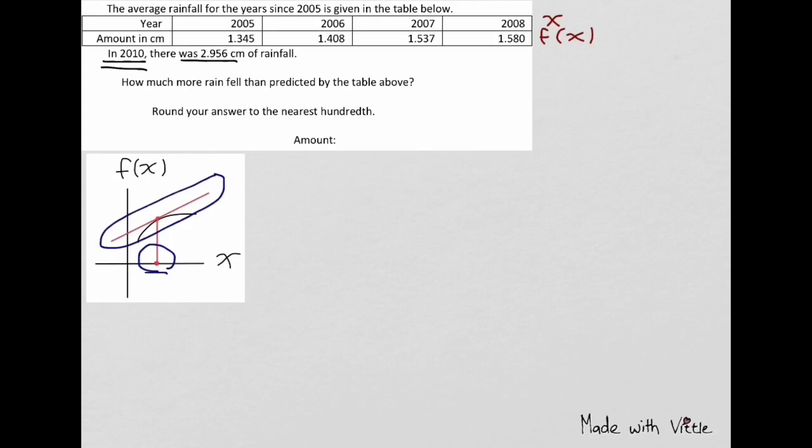To find the average rainfall for the year 2010, we will name it as x and the two values which are close to it as x1 and x2. We will call the two values as y1 and y2.